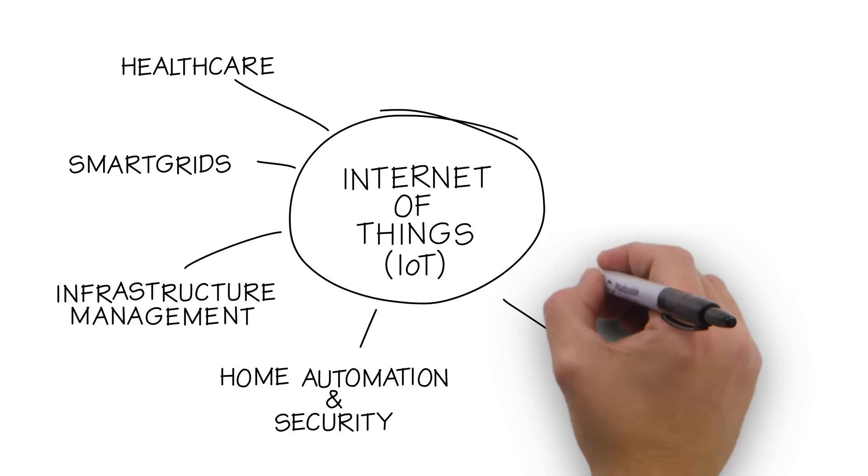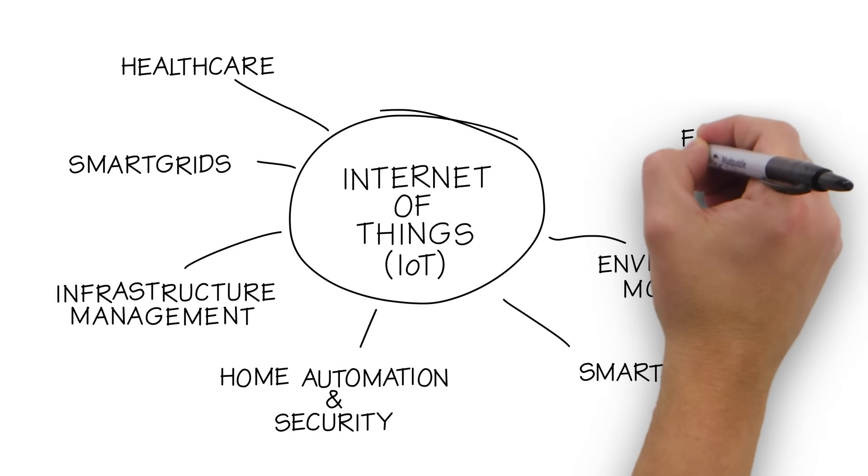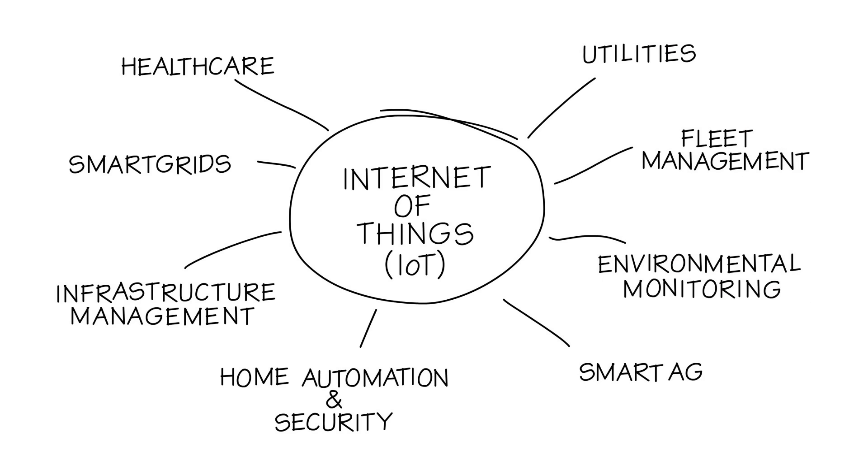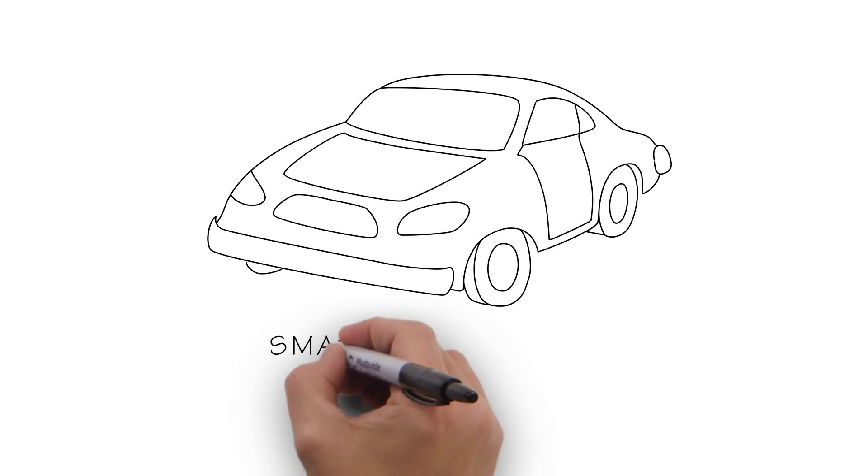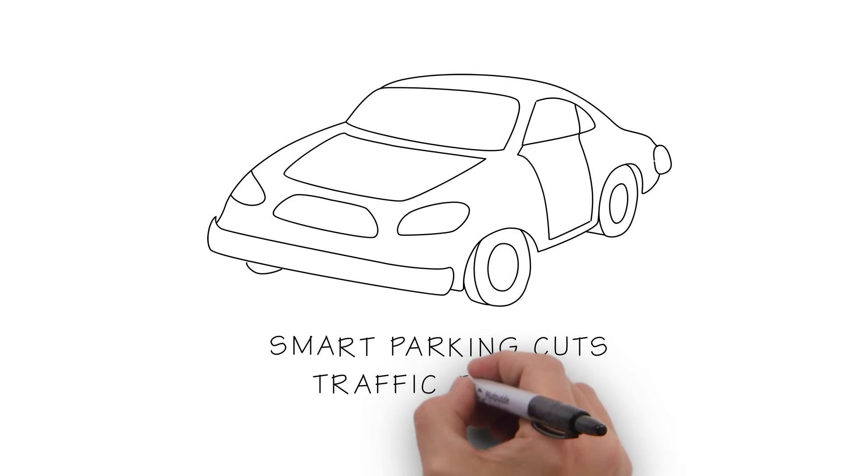While we think of the Internet of Things as being more convenient for our lives, there are additional benefits for Americans, such as by reducing the time one spends looking for a parking spot, it cuts traffic by 10%.